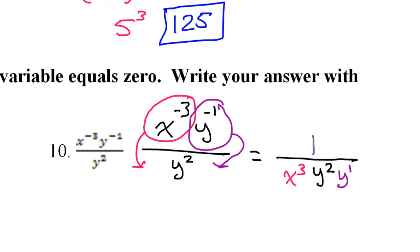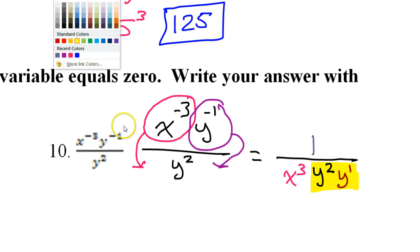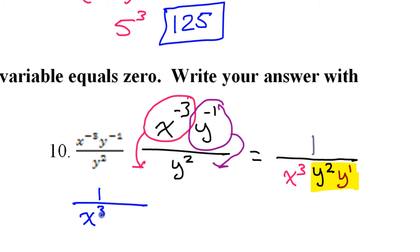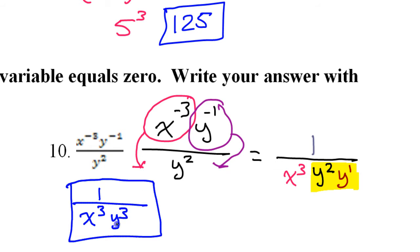Now I can clean this up because the y's combine. Y squared times y is y to the 3rd power. So the final answer is 1 over x to the 3rd power times y to the 3rd power. That's the answer to number 10.